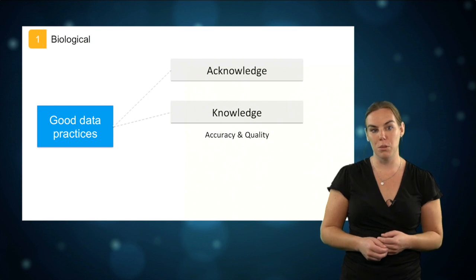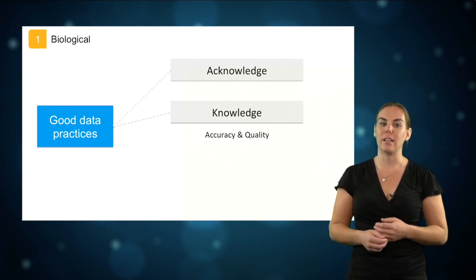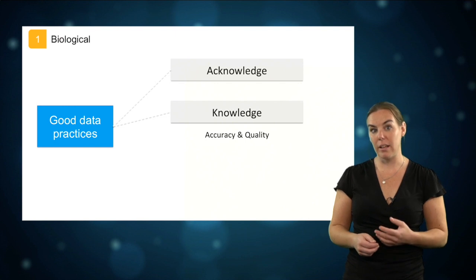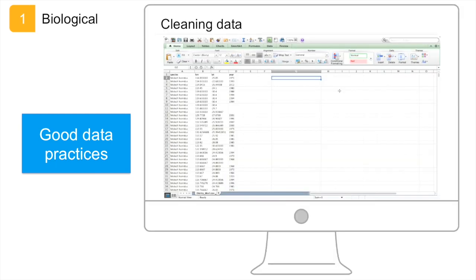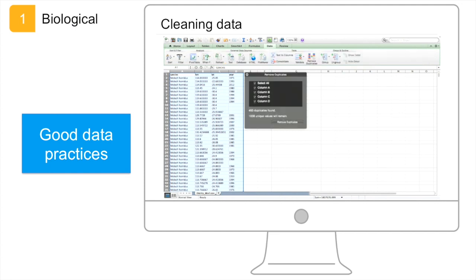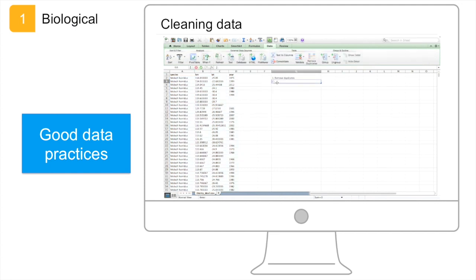With species distribution data, the bare minimum you can do to validate your data is to check whether there are duplicate records or any strange occurrence points on the map. For example, occurrence points in odd places such as points in the ocean for a terrestrial species, as the red dots here. You can easily clean the data by downloading the excel file, checking for duplicate records and removing them if you wish, and then sorting by longitude and latitude to check whether there are any odd records so you can remove the outliers.